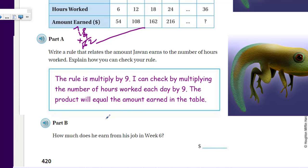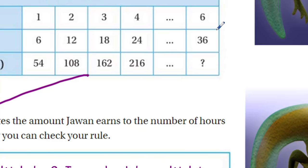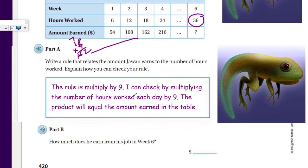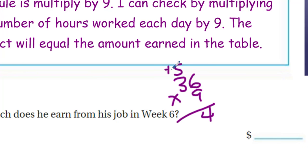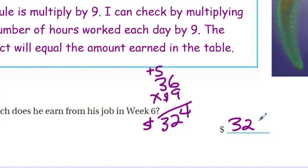We can check the rule by taking each value from the table and multiplying the hours worked by nine — the product will equal the amount earned. For part b: how much does Juan earn in week six? Week six he worked thirty-six hours. Multiply thirty-six by nine: six times nine is fifty-four, put down four carry the five; nine times three is twenty-seven, plus five is thirty-two. The answer is three hundred twenty-four dollars.